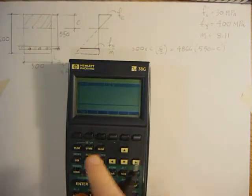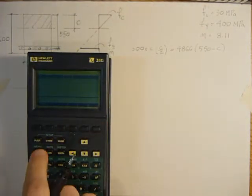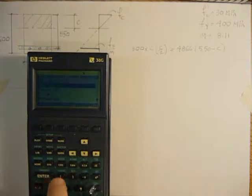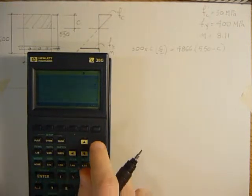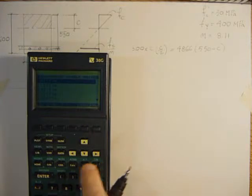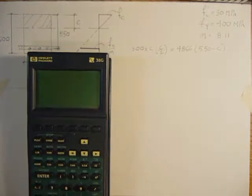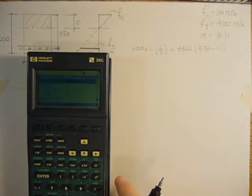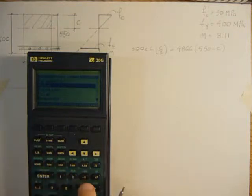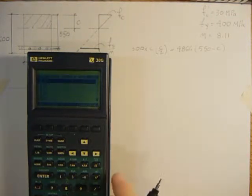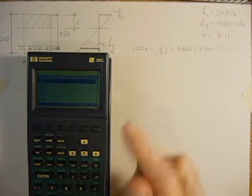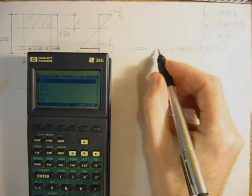So we can just work that out, it's a quadratic equation. I'm just going to enter it into the library. We'll go to solve mode and then we'll put this equation in. So we'll say Y equals 300 C squared over 2. We'll say C is X, so that's 150 C squared.